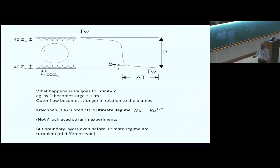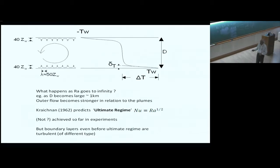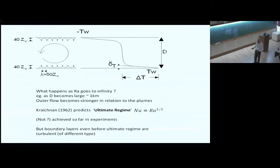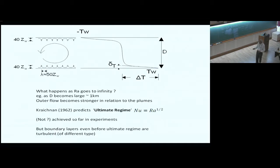This controversy still remains whether experiments have confirmed this regime. There is some evidence it may be starting to appear around Ra ~ 10^17. But even before the ultimate regime, the boundary layers are turbulent — maybe of a different type. If you put a temperature probe very close to the wall, you will see large fluctuations in temperature and heat flux.